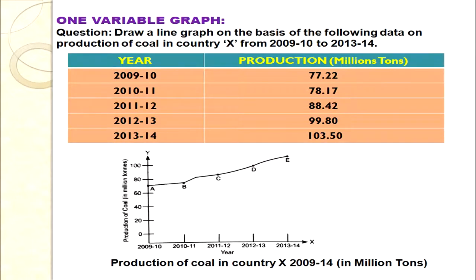Let's discuss the one-variable graph. In this example, year is given on one axis and production in million tons on the other. When drawing these graphs, first label the diagram — draw the y-axis and x-axis and label them properly. Give the heading, for example: 'Production of Coal in Country X from 2009 to 2014 in Million Tons.' Then start plotting the data.